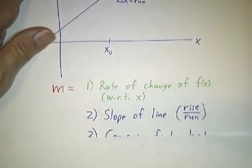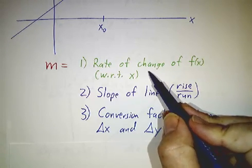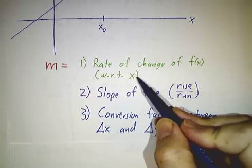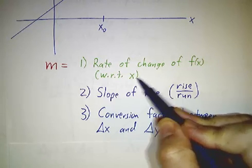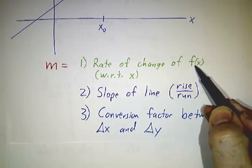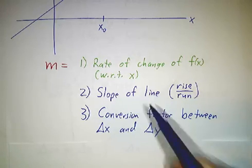So you should think of m in three ways. One is it's a rate of change. It's how sensitive is the function to changes in x. If you're continually increasing x, how fast is f of x changing?